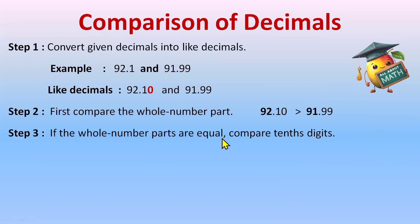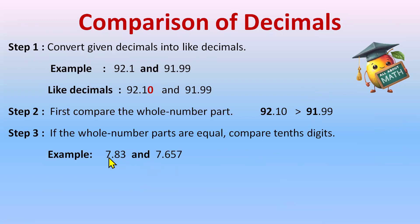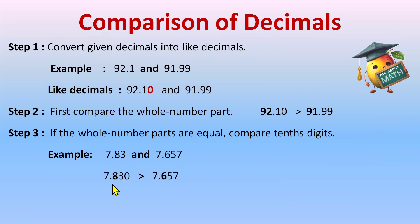If the whole parts are equal, then compare the tenth digit. Here the whole part is the same — seven and seven. First convert to like decimals: there are two digits here and three digits here, so I insert one zero to make them like decimals.